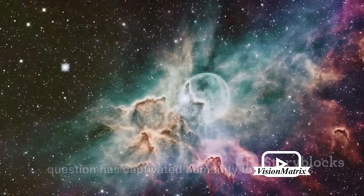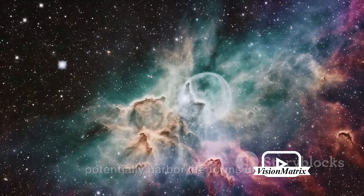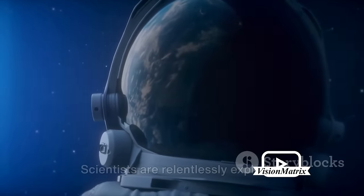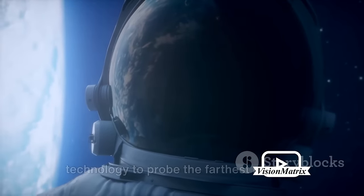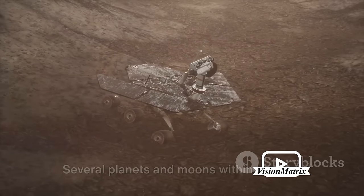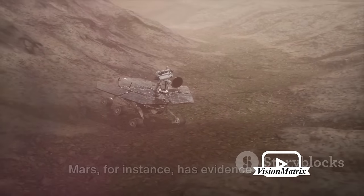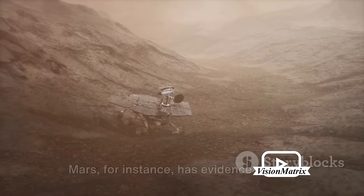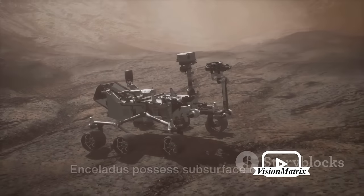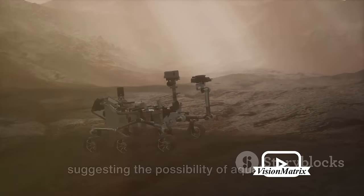This question has captivated humanity for centuries. The cosmos, vast and mysterious, could potentially harbour life forms unlike anything we've ever seen. Scientists are relentlessly exploring this possibility using cutting-edge technology to probe the farthest reaches of space. Several planets and moons within our own solar system have conditions that could potentially support life. Mars, for instance, has evidence of past water flows. Jupiter's moon Europa and Saturn's moon Enceladus possess subsurface oceans, suggesting the possibility of aquatic life.